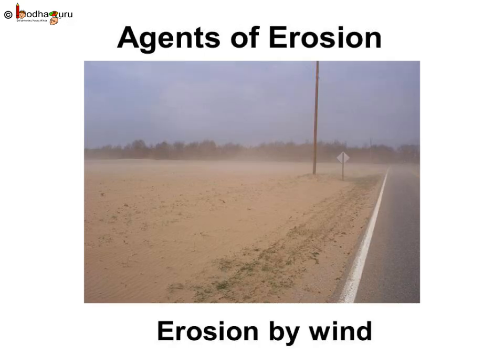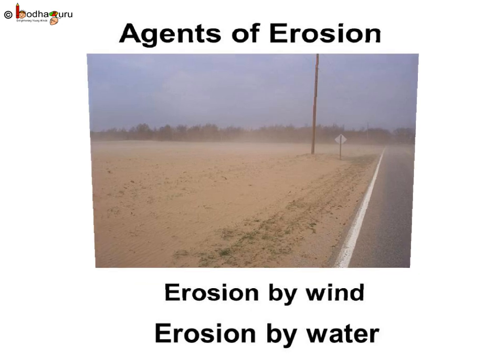Wind is one of the main agents of soil erosion. Wind blows away topsoil from places where there is no vegetation. Roots of plants hold the soil in place, and the speed of wind is reduced if there are many plants. The soil erosion will be less in such places. Soil erosion by wind is most common in the deserts.